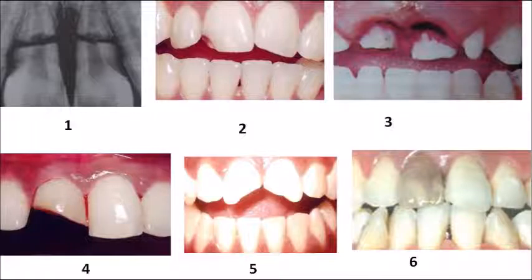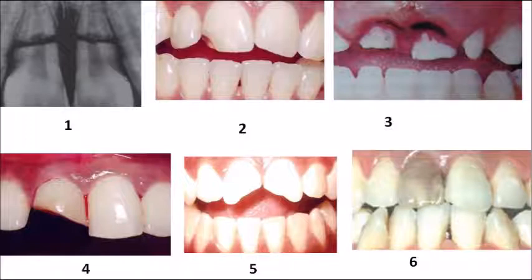In the fourth picture, there is crown fracture with slight bleeding visible, indicating enamel, dentine, and pulp exposure — so it belongs to Class 3. The fifth picture shows considerable crown loss with both enamel and dentine chipped off, but no pulp exposure, so it belongs to Ellis Class 2.